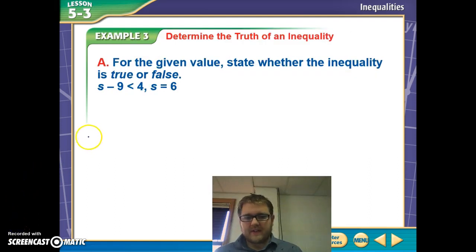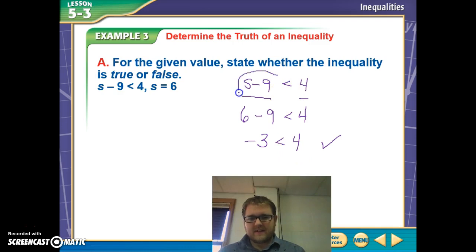Now we want to talk about determining whether a statement is true or false. We have the statement given: s minus 9 is less than 4, s equals 6. We have to prove that this side is less than this side or show that it's not. So we have 6 here for s, so we'll plug that in. 6 minus 9 is less than 4. So 6 minus 9 ends up being negative 3 is less than 4. Since that is a true statement, negative 3 is less than 4, we can say that this statement here is true.